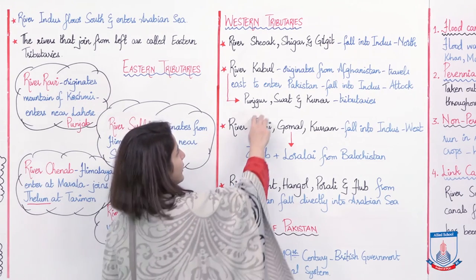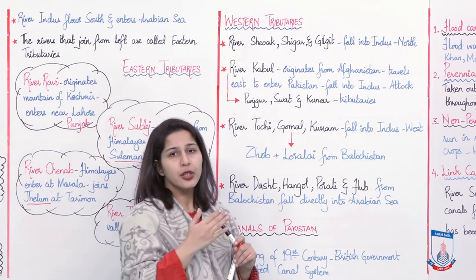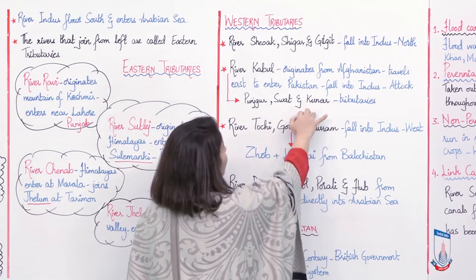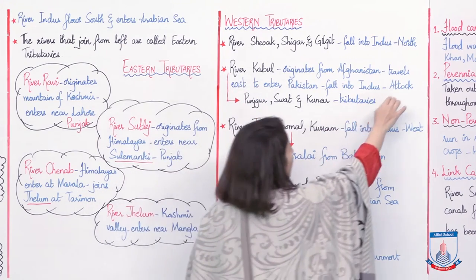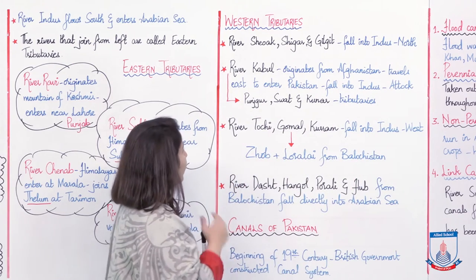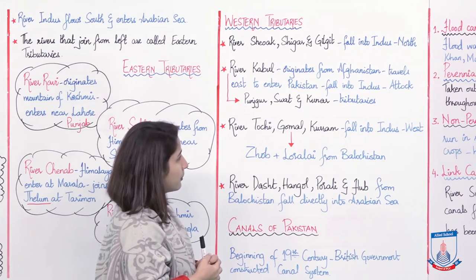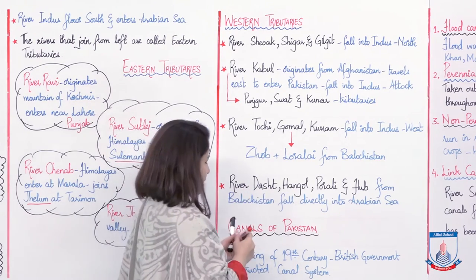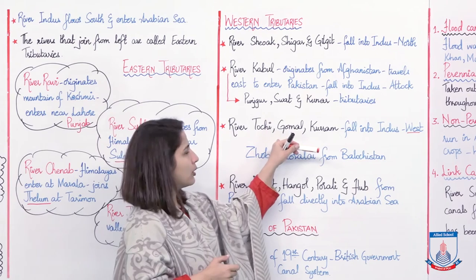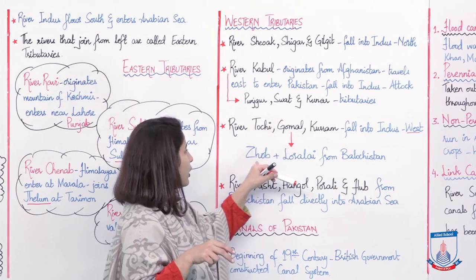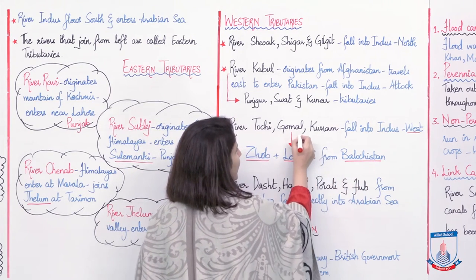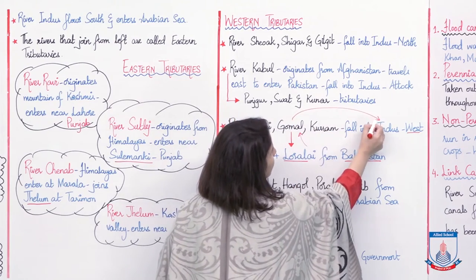River Kabul is also one of the major rivers and has its own three tributaries: Panjgora, Swat, and Kunar. These three tributaries first join River Kabul, and then River Kabul falls into River Indus at Attock. Then there are rivers Tochi, Gomal, and Kuram — these three rivers start from the west and fall into the Indus. Gomal River has two further branches: Zohab and Loralai, both of which originate from Balochistan and fall into Gomal, which then ultimately falls into the Indus.